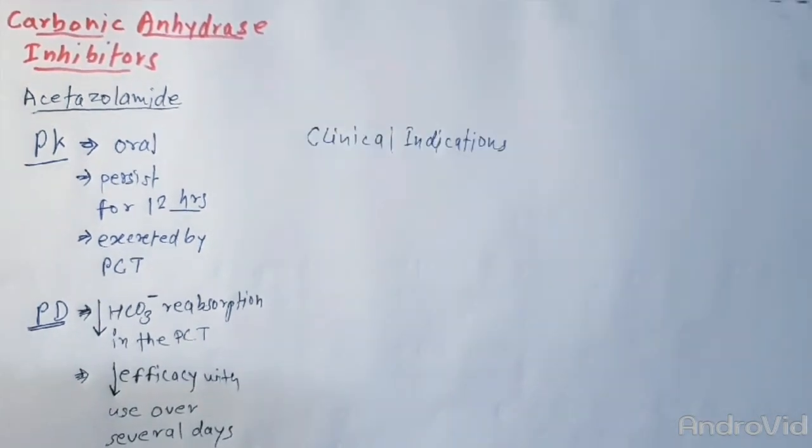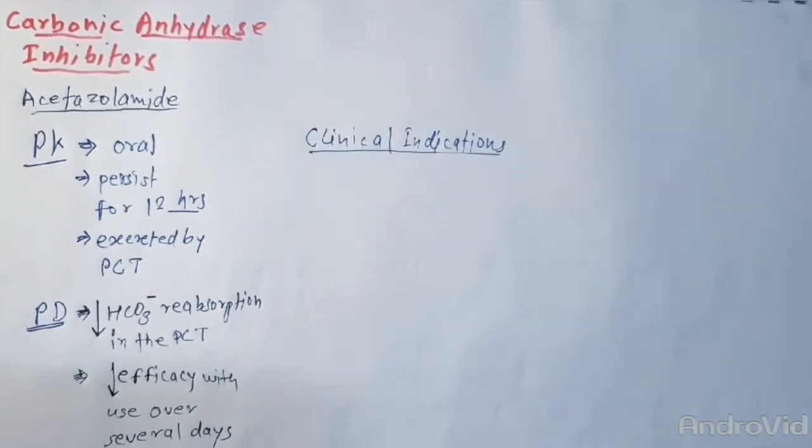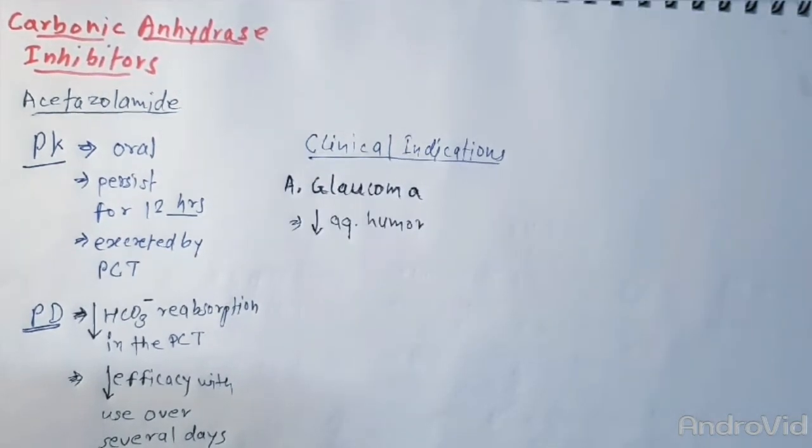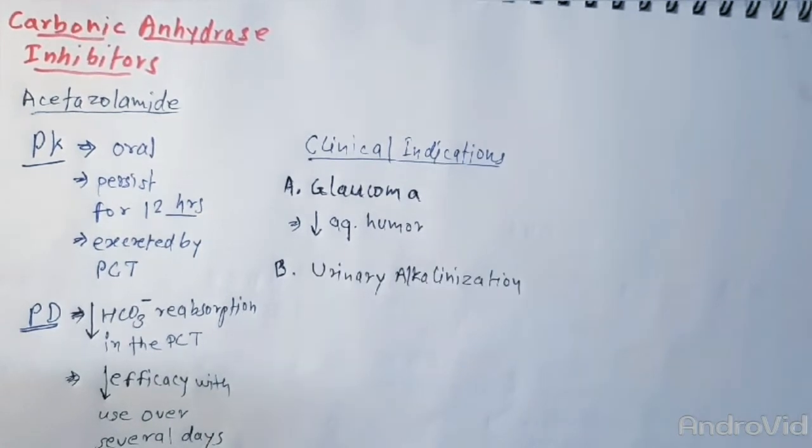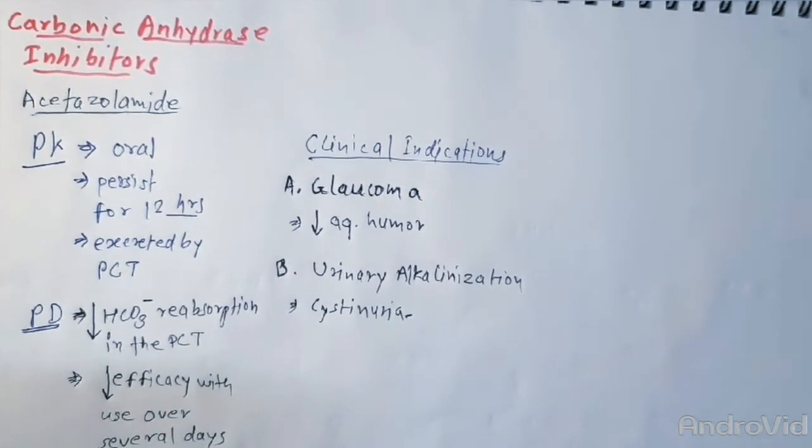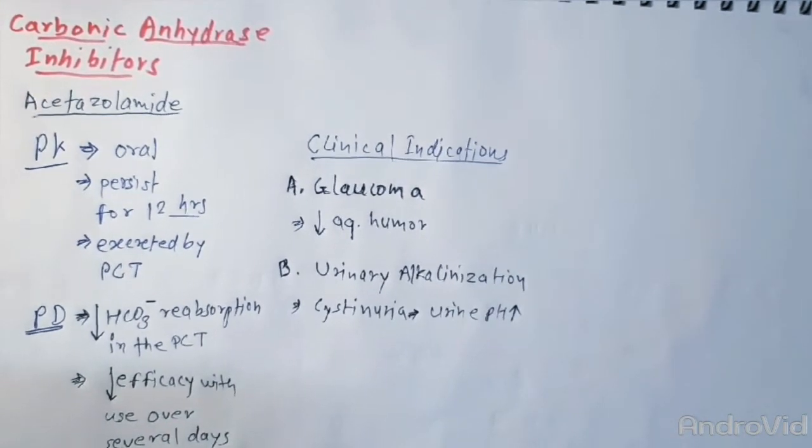Now talking about their clinical indications, acetazolamide can be used in glaucoma to reduce the formation of aqueous humor. It can also be used for urinary alkalinization. In cystinuria, when pH of urine increases by acetazolamide, the solubility of cysteine will also increase.